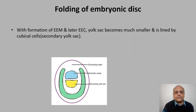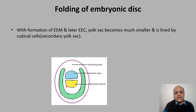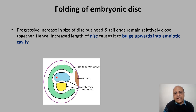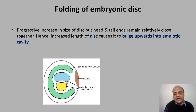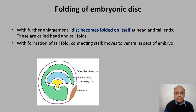Now we come to folding of the embryonic disc. With the formation of extra-embryonic mesoderm and extra-embryonic coelom, the yolk sac becomes smaller, is lined by cuboidal cells, and is now called the secondary yolk sac. The head and tail ends tend to stay close to each other, but the embryonic disc increases in size, causing it to bulge upwards into the amniotic cavity. With further enlargement, the disc becomes folded upon itself.